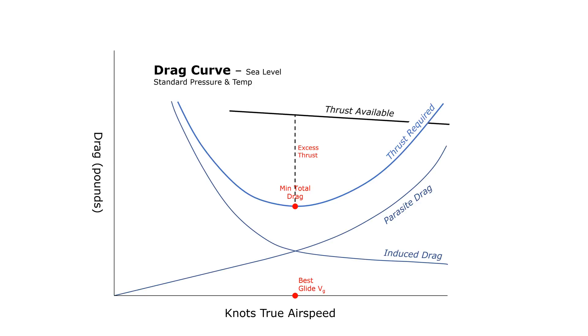So our maximum excess thrust doesn't come at the same speed where we have minimum drag, but actually happens at a bit of a slower airspeed around here, where that dashed line is the longest.